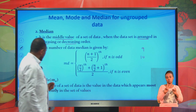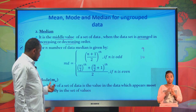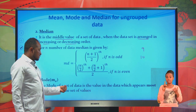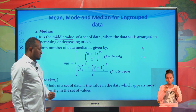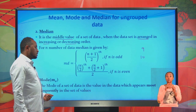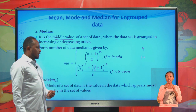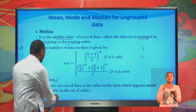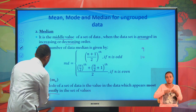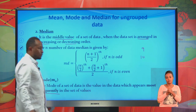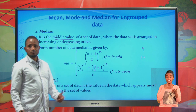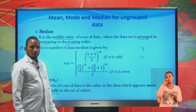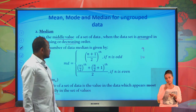Now, mode. The mode of a data set is the value that appears most frequently. The data value found most often is called the mode.